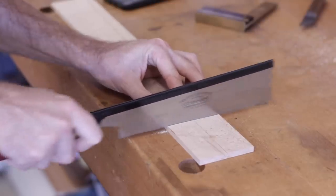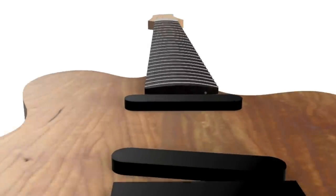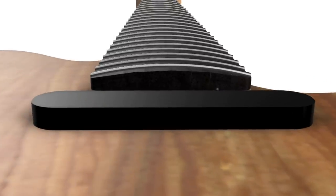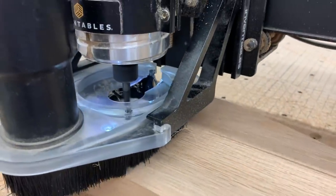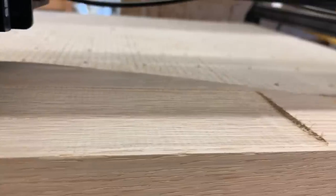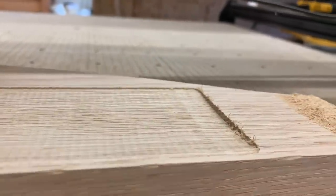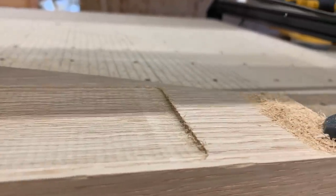So all fretboards have some sort of radius to them, and it's usually a matter of personal preference. But I decided to go with a 12-inch radius for mine, which is fairly flat. There are different ways to radius a fretboard, but I decided to go with a sanding block with the proper radius carved into it. You can buy these pre-made, but I figured I would have Greg knock one out for me.